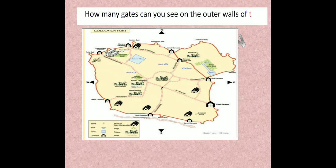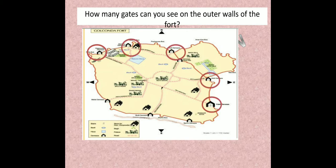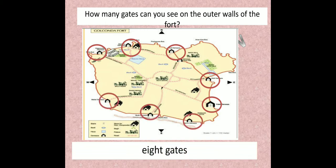How many gates can you see on the outer walls of the fort? Look at the symbol of the gate from the key and count the gates on the outer wall. Counting: 1, 2, 3, 4, 5, 6, 7, and 8. So in all there are 8 gates on the outer walls of the fort.